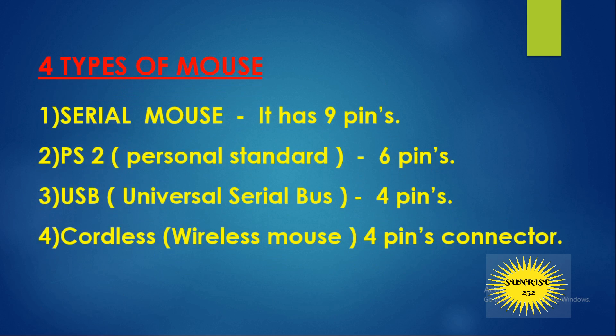There are four types of mouse. The first is the serial mouse, which has a 9-pin connector. The second is the PS/2 mouse, which has a 6-pin connector. The third is the USB mouse — USB stands for Universal Serial Bus — which has a 4-pin connector. The fourth is the cordless or wireless mouse, which also uses a 4-pin connector.